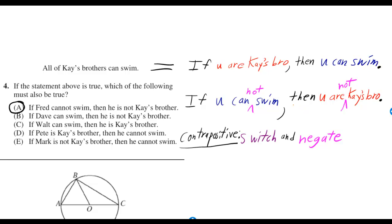Why is that true? Well, if you were K's bro, then you could swim. So if you can't swim, then clearly you're not K's bro.